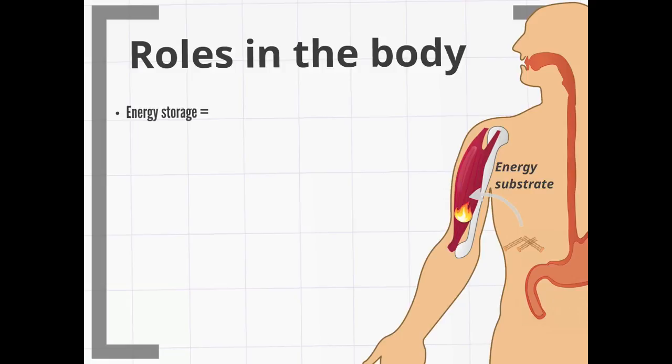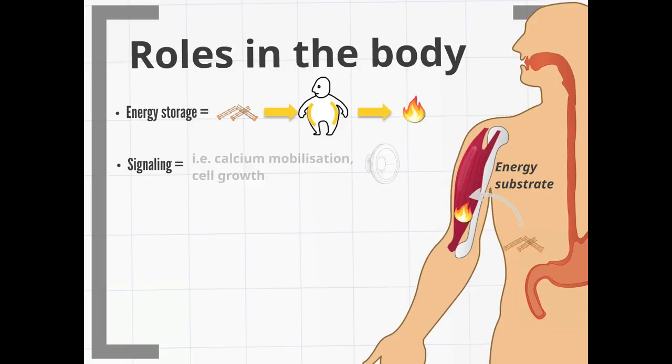Energy storage: Triglycerides stored in adipose tissue are a major form of energy storage. Signaling: Lipid signaling is a vital part of cell signaling, inflammation and immunity.